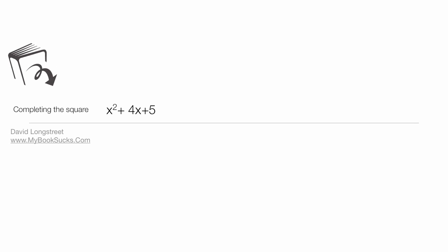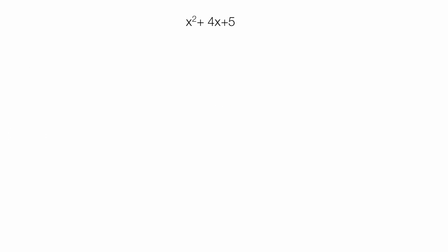In this tutorial, I'm going to do completing the square where there's no solution and describe what that means and how that works. The equation I'm going to solve is x squared plus 4x plus 5, and I'll set this all equal to 0.